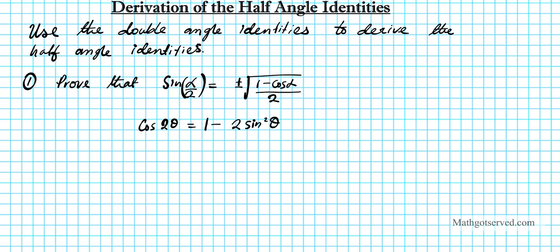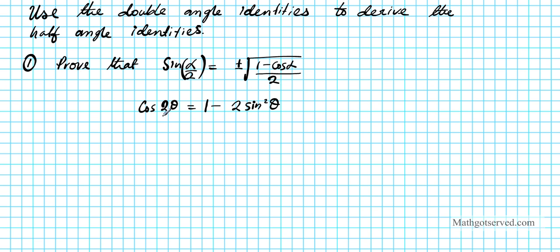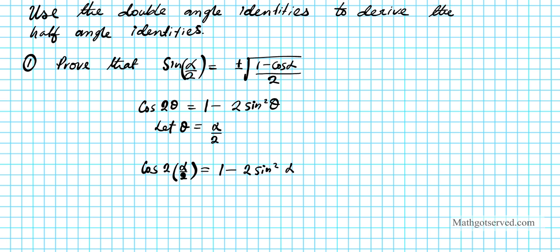This is what we are going to use. So what we are going to do first is let θ be equal to alpha over 2, and substitute alpha over 2 for θ in this equation. That is going to yield cosine of 2 times alpha over 2, equals 1 minus 2 sine squared of alpha over 2. Remember, our goal is to isolate sine of alpha over 2.